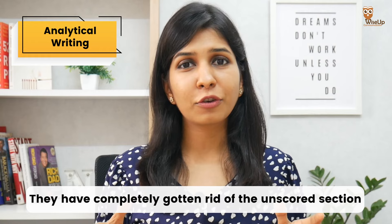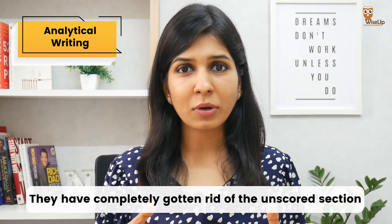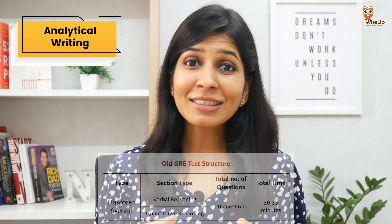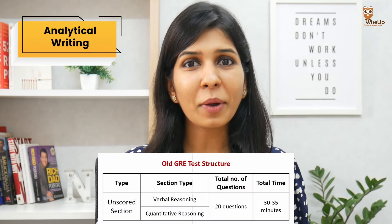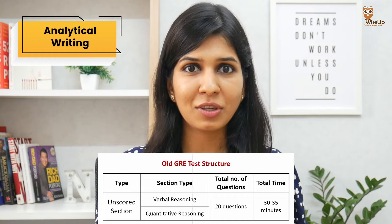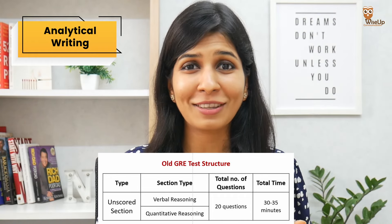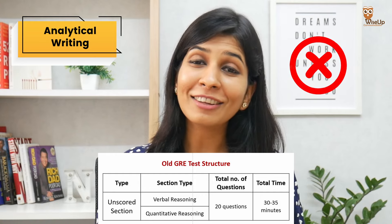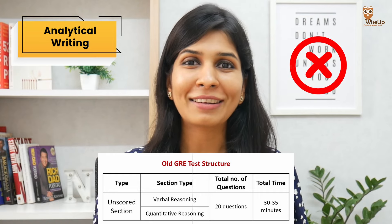Apart from this, they've completely gotten rid of the unscored section, which was added by ETS for research purposes only — its scores were never added to the final report. This section used to consist of 20 questions from Verbal and Quantitative Reasoning and used to take 30 to 35 minutes. So now you will not have this section in the new test format anymore.